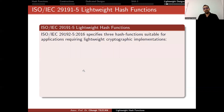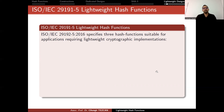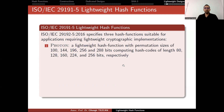At the ISO part, we have actual standards from 2016. This standard specifies three hash functions suitable for applications requiring lightweight cryptographic implementations. The first one is Photon, a lightweight hash function with permutation sizes of 100, 144, and so on bits.